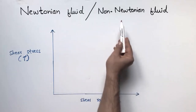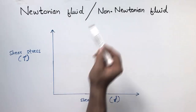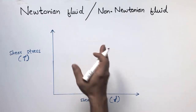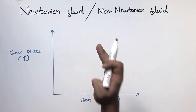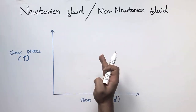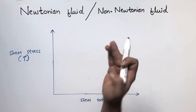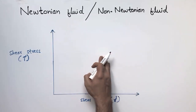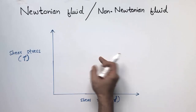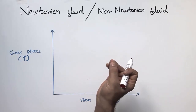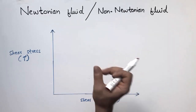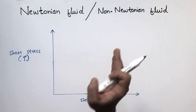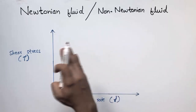These two types of fluid depend upon the viscosity of the fluid. Viscosity shows the resistance to the deformation of a fluid. The more viscous the fluid is, the more resistance to deformation it shows. For example, water is a less viscous fluid, while honey is a more viscous fluid because it shows more resistance to deformation.